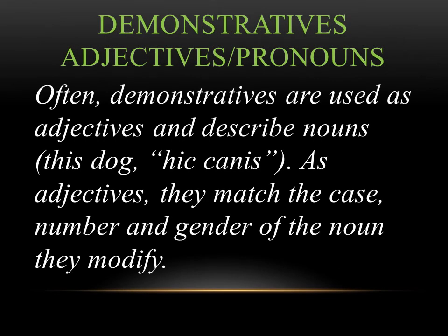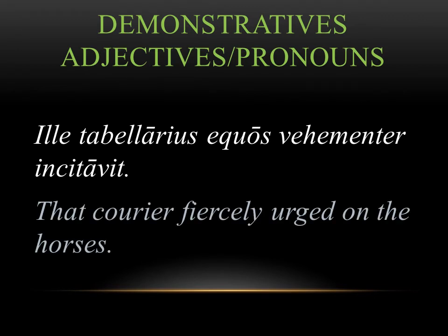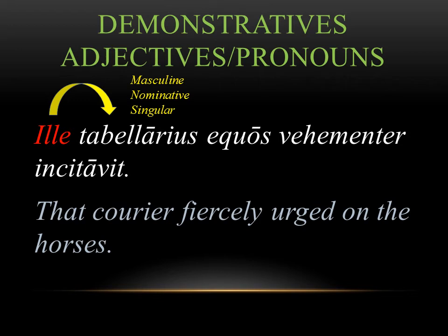Demonstratives are often used as adjectives and describe nouns. As adjectives, they have to match the case, number, and gender of the noun they modify. For example, in the sentence that courier fiercely urged on the horses, the demonstrative is ille, which we translate as that. The noun it goes with is tabularius, which is masculine, nominative, singular — this is why we use ille, which is also masculine, nominative, singular. Case, number, and gender match up.